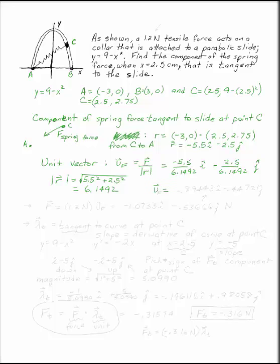The unit vector is (-5.5 / 6.1492)i minus (2.5 / 6.1492)j, which equals -0.89443i minus 0.44721j. That's the unit vector in the direction of F. To get the actual force vector F, multiply the unit vector by the magnitude of 1.2 newtons, giving F = -1.0733i minus 0.5367j newtons.